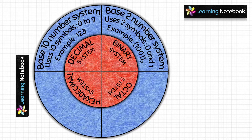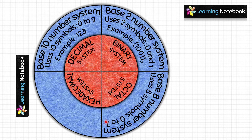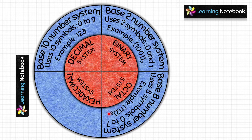Next, we will write about the octal number system. It is a base-8 number system, so it uses 8 symbols — from 0 to 7. An example of an octal number is 112 (written with base 8 subscript), which signifies it is an octal number.